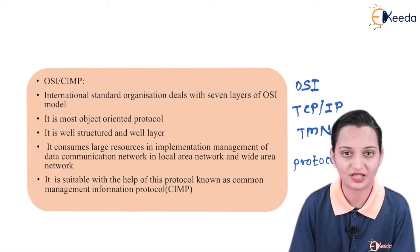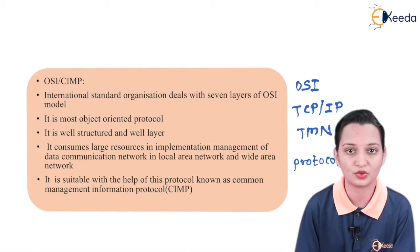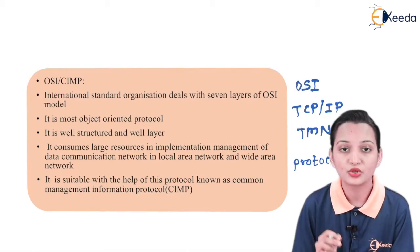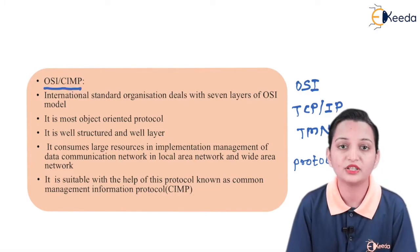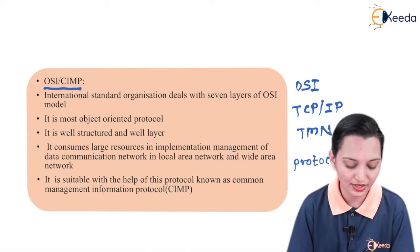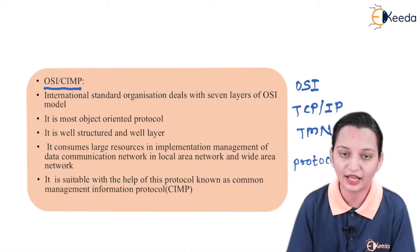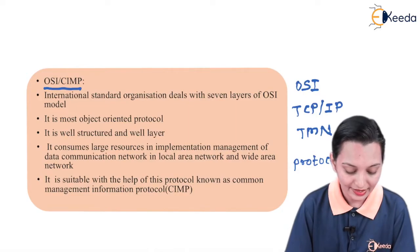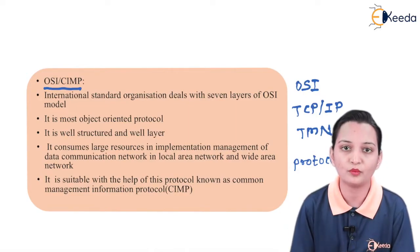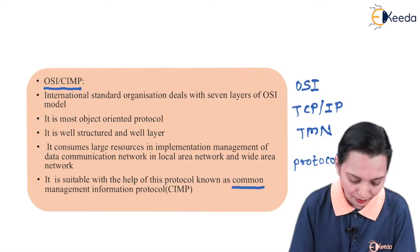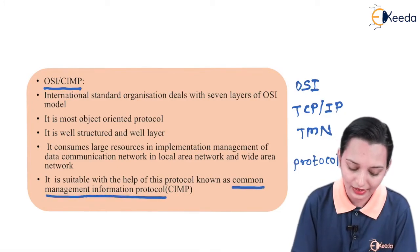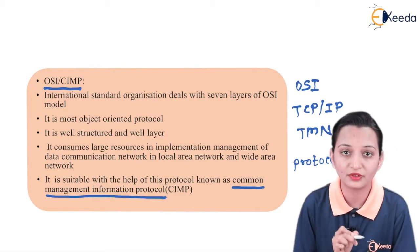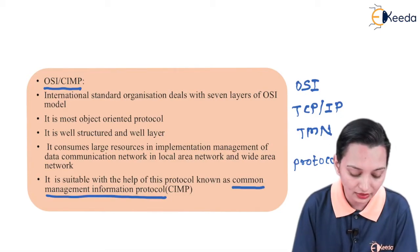Protocols lie at particular layers, and different layers contain different protocols with different rules and regulations set for every type of layer in every model. It is very important to understand network management standards. Let us start with the first standard, which is known as OSI-CMIP. CMIP is the name of the protocol, which stands for Common Management Information Protocol, and it lies in the OSI model.